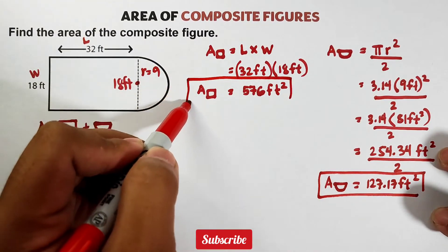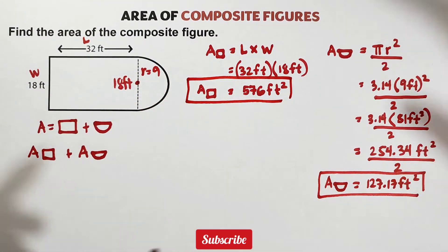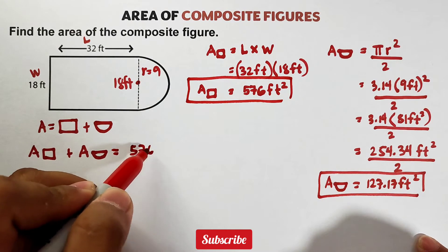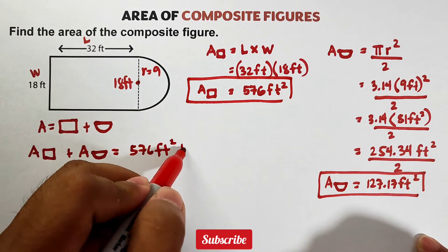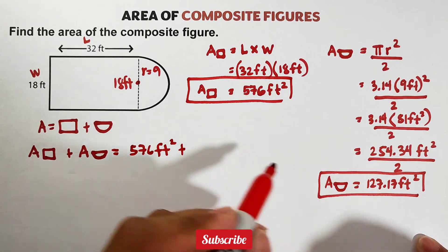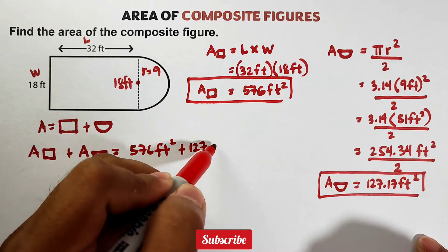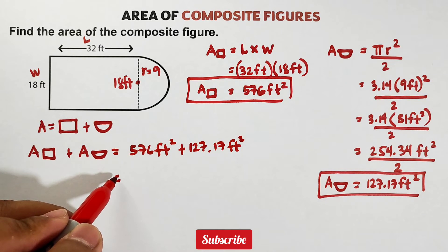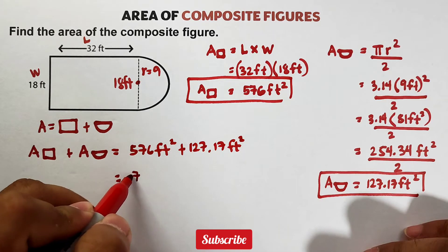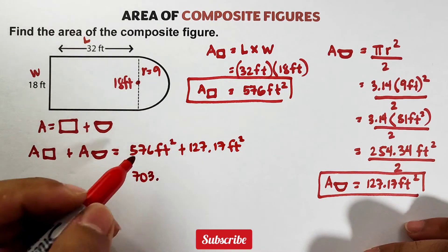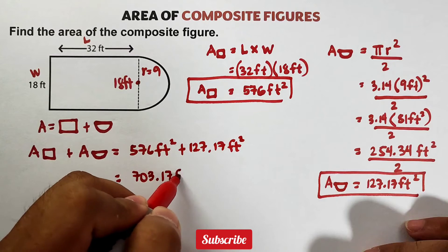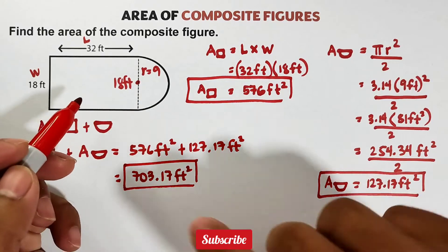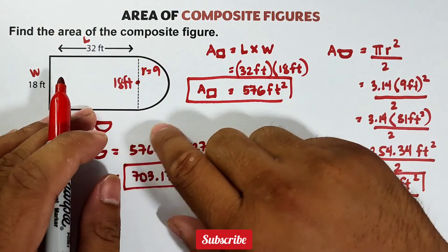Since we are done getting the area of the rectangle and half circle individually, add them together. For the rectangle, that is 576 feet squared plus for the half circle, 127.17 feet squared. Add them. Their sum is simply 703.17 feet squared. This is the area of the entire composite figure formed by this rectangle and this half circle.